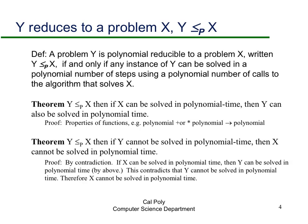Formally, Y is polynomially reducible to X if Y can be solved in a polynomial number of steps using a polynomial number of calls to the algorithm that solves X. This implies that if Y is reducible to X and X can be solved in polynomial time, then Y can also be solved in polynomial time. The proof is straightforward: a polynomial number of calls to X multiplied by the polynomial time to solve X is still polynomial.